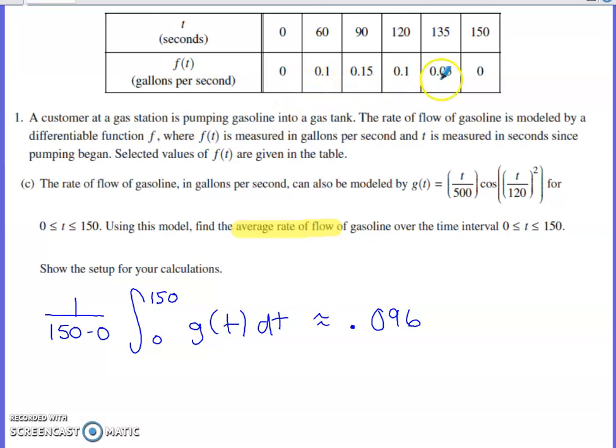And that kind of makes sense if you look at these values for f(t). Now, I know g(t) isn't necessarily equal to f(t), but we had values that were near 0.1, a few values beneath 0.1. So an average rate of change of 0.096 does seem to make sense for another function that models the same situation.